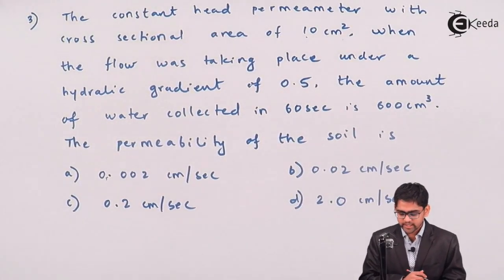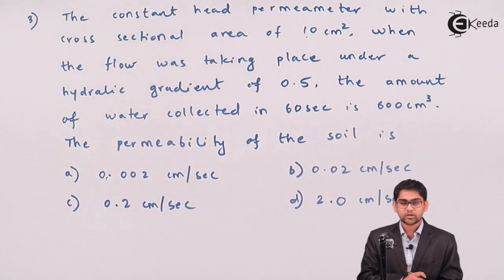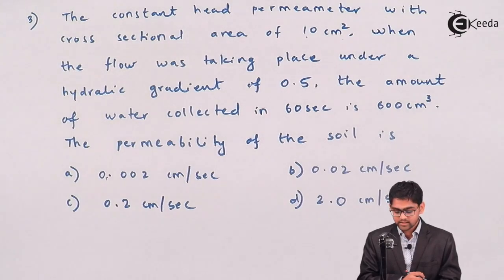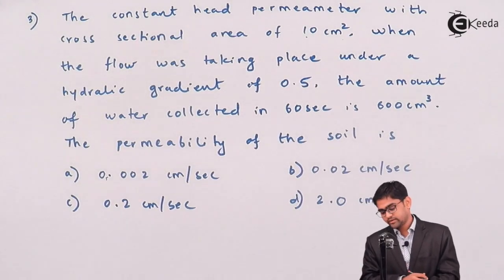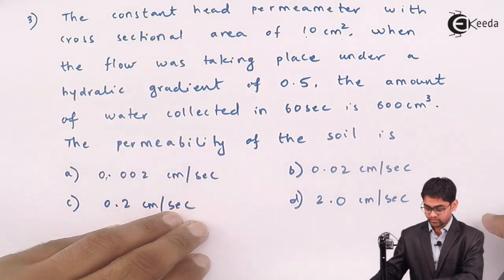When the flow was taking place under the hydraulic gradient of 0.5, the amount of water which is collected in 60 seconds is 600 cm³, and the last thing is just to evaluate the coefficient of the permeability of soil.